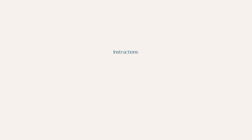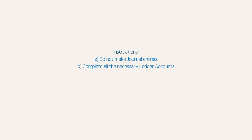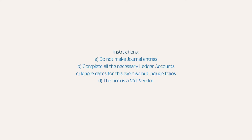The following are the instructions to the question. A: Do not make journal entries. B: Complete all the necessary ledger accounts. C: Ignore dates for this exercise and include folios. D: The firm is a VAT vendor. E: No need for statements of account.